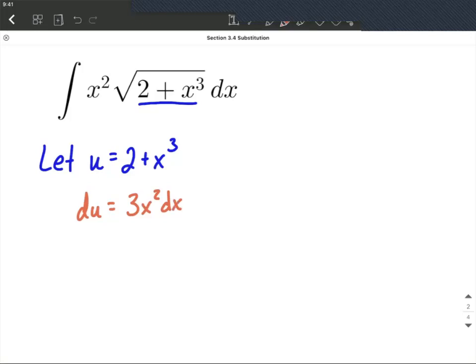Now, I want to be able to replace everything else except for what's underneath the square root. So I want to put it all in terms of u's. So I see we have a dx here, just like we have a dx down here. We have an x squared up in the original, we have an x squared down here, but we don't have a 3.